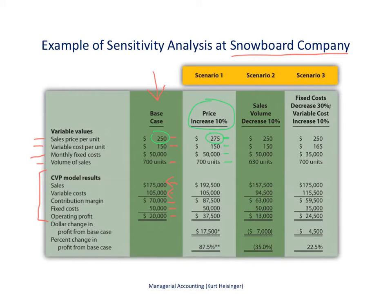We wanted to know what would happen if the sales price was 10% higher than we had anticipated. Now that we have this information related to this new scenario, we plug it into the contribution margin income statement, and here are the numbers.